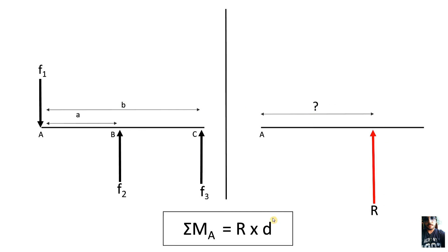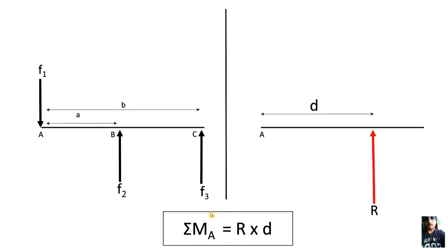In this expression, the term D is the distance of the resultant force from point A. We know how to find the resultant force, and in the last lecture we learned how to find the moment. So on doing simple mathematics, we will get distance D.